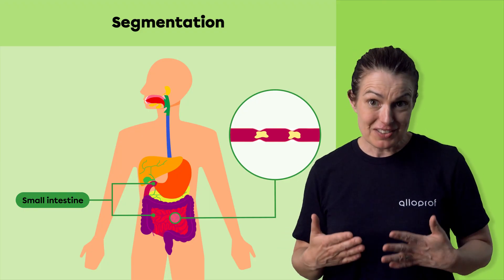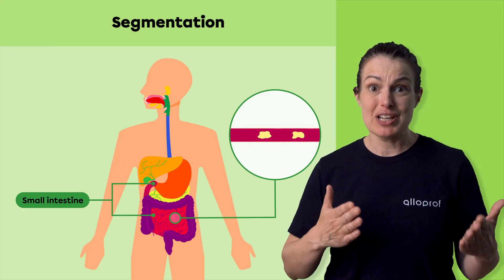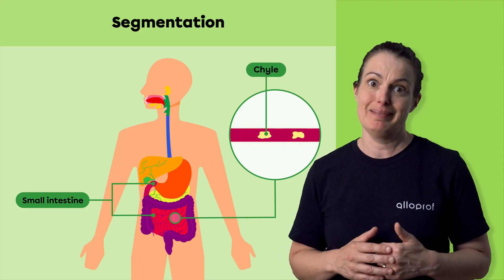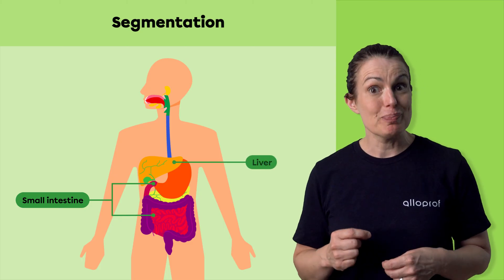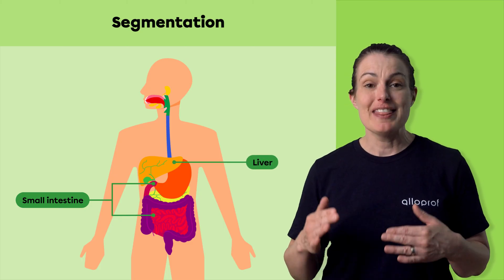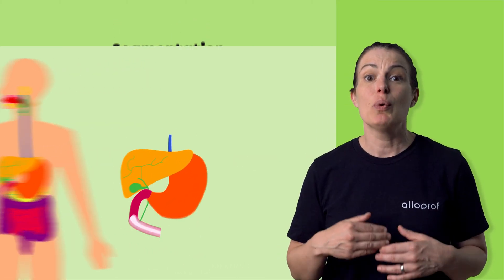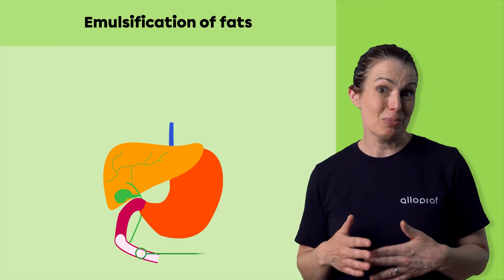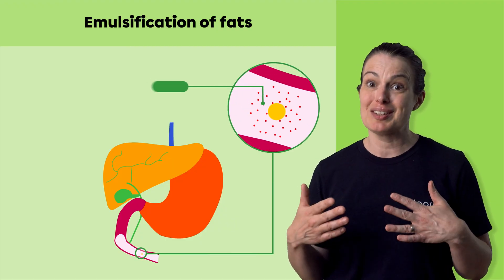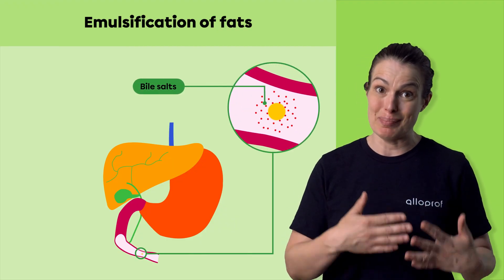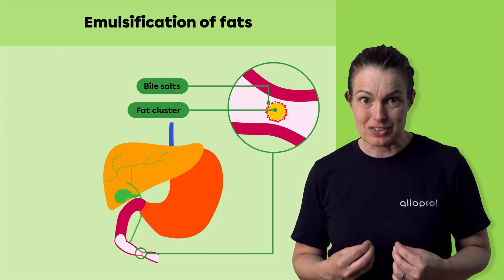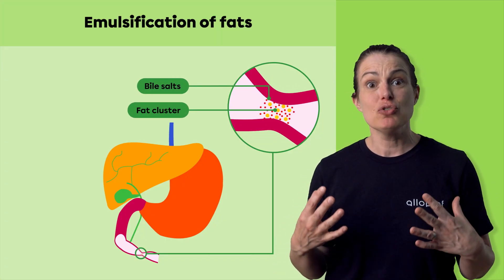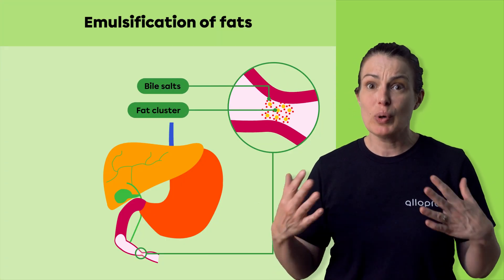As a result of segmentation, the chyme transforms into a whitish liquid called chyle. The bile produced by the liver then travels to the small intestine where it allows for the emulsification of fats. This is a process which, thanks to the bile salts contained in the bile, breaks up the fat clusters and disperses them into fine lipid droplets throughout the chyle.